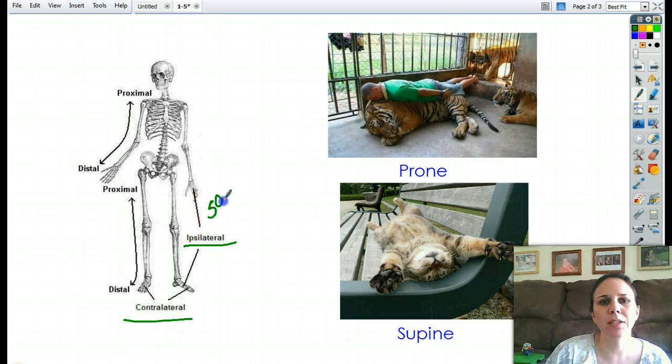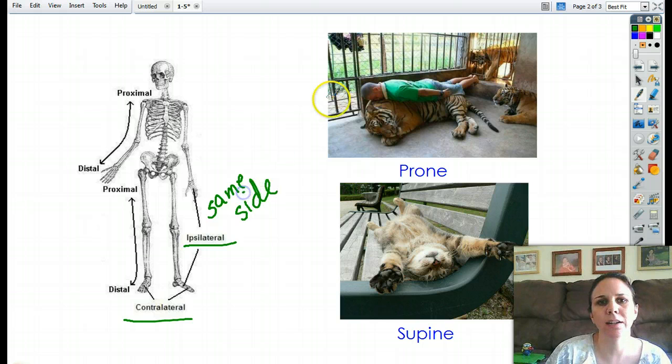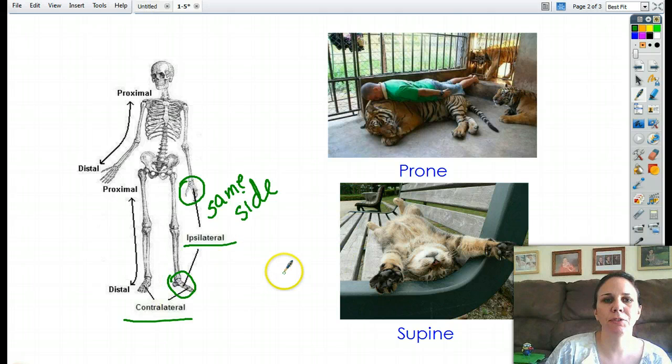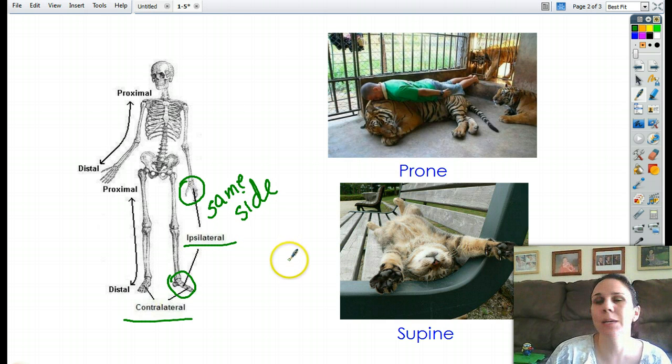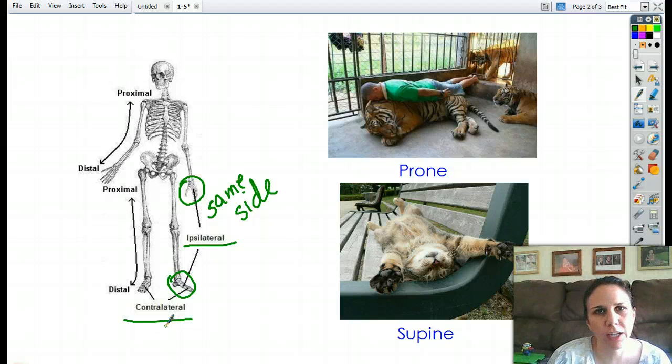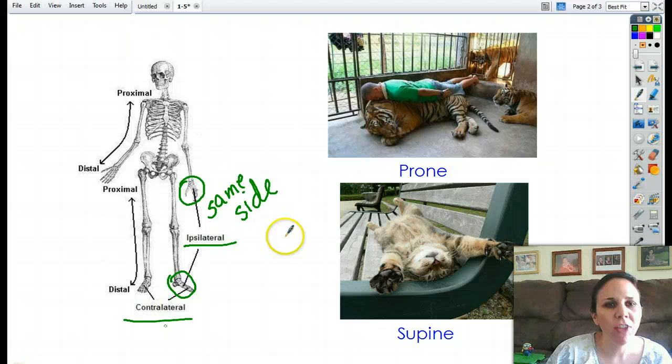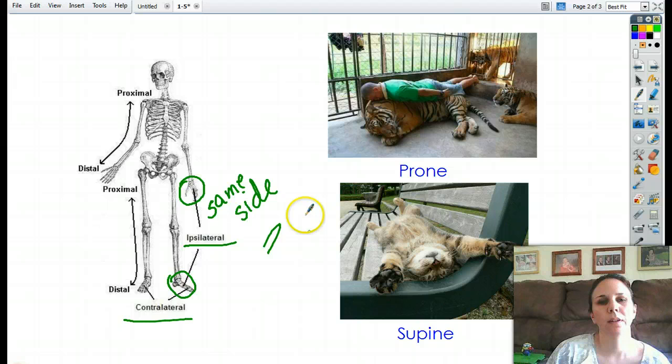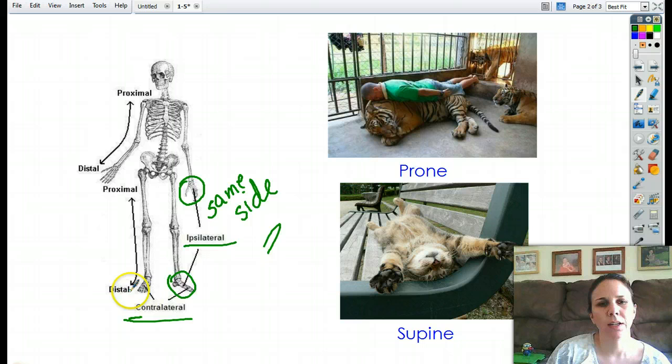Ipsilateral means on the same side of the body. So this guy's left hand and left foot are ipsilateral. They are on the same side of the body. And contra, just like contrast, I can't think of any other words that have contra in it. And although you guys are all probably telling me five right now, contra means basically the opposite. Oh, I pinched. There we go. And contralateral. So contra means opposite sides. So now we have a left foot and a right foot are contralateral to each other.